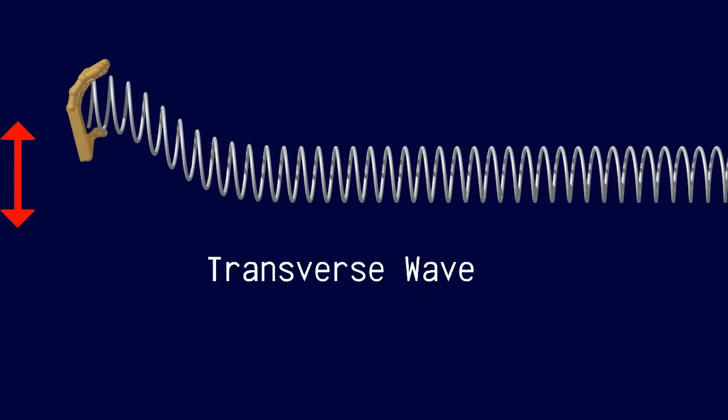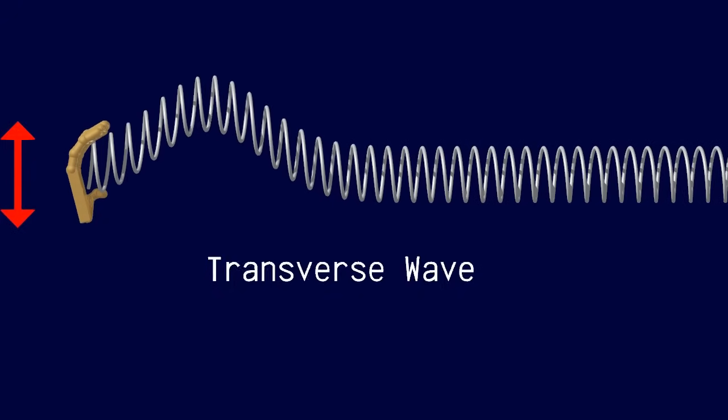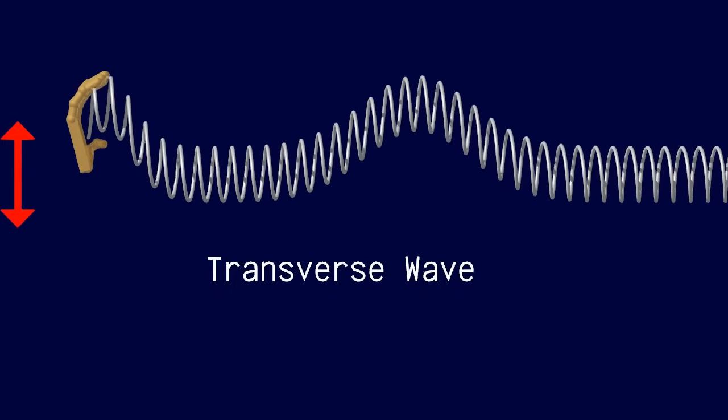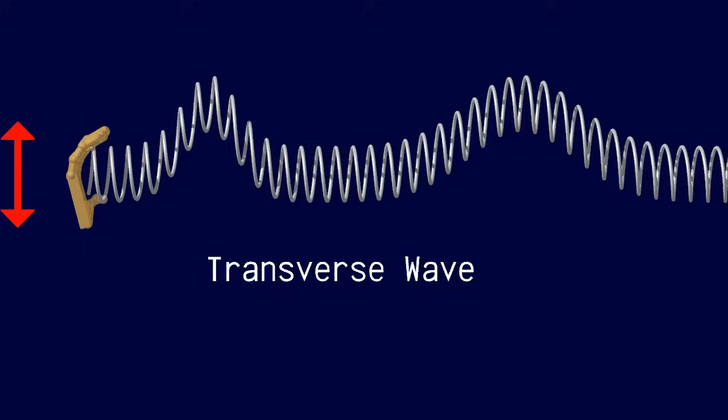In a transverse wave, the disturbance that makes up the wave is perpendicular to the direction in which the wave travels.